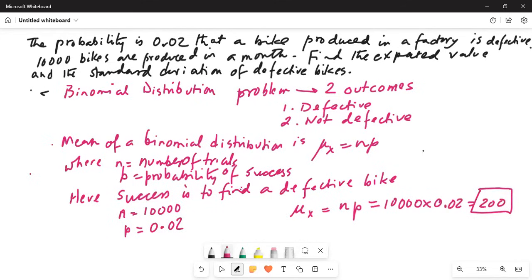So the mean of this binomial distribution is 200. What does this mean? Out of 10,000 bikes produced, on the average, 200 will be defective.